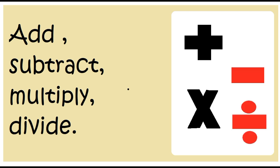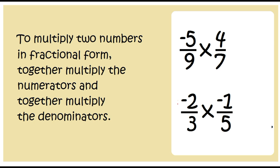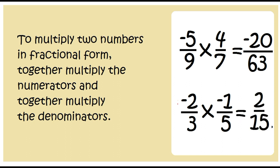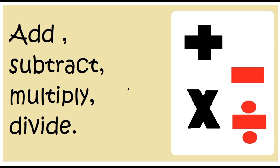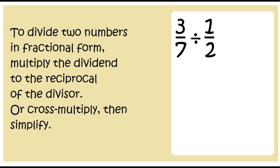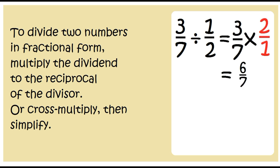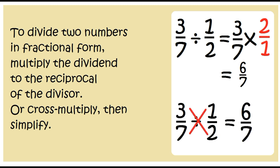Add, subtract, multiply, divide. Add, subtract, multiply, divide. Multiply two numbers in fractional form: multiply the numerators and multiply the denominators together. To divide two numbers in fractional form, multiply the dividend by the reciprocal of the divisor, or cross multiply then simplify. Oh baby, please always simplify! Oh yeah!